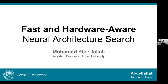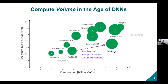I'll talk about ways of making neural architecture search both fast and hardware-aware. Starting with motivation: the compute volume has increased dramatically in the age of deep neural networks. In the same model family, to increase just one percent in task accuracy — in this case image classification — we need to double the computation, going from ResNet-50 to ResNet-101. This exponential increase in compute volume and model size is almost unsustainable.